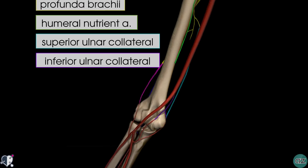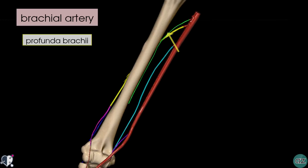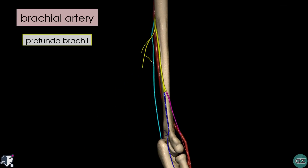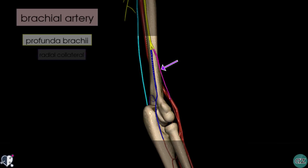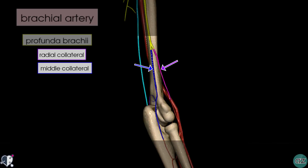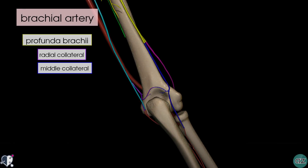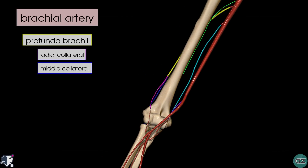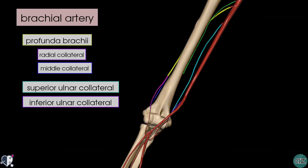Let's take a look at the profunda brachii artery, which we saw in yellow. This artery is the largest branch, and it passes posteriorly to supply the posterior compartment of the arm. The profunda brachii artery terminates by dividing into two branches: in purple you can see the radial collateral artery, and in blue we've got the middle collateral artery. So we've now looked at four collateral arteries: the superior and inferior ulnar collateral arteries, which arise directly from the brachial artery, and the middle collateral artery and radial collateral artery, which arise from the profunda brachii artery.